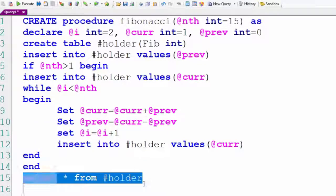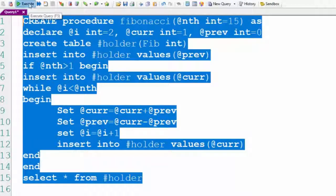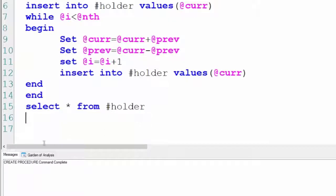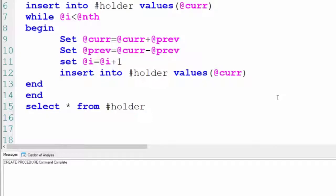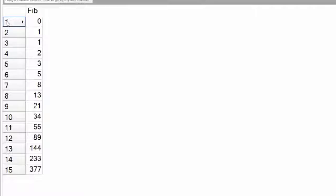When we're done, we'll select everything from the holder. Here we go. We've created the stored procedure. Now we're going to execute this. Execute Fibonacci, the parameter is going to be fifteen. Now it's going to build these: zero, one, one, two, three, five, eight, thirteen, twenty-one, thirty-four, fifty-five, eighty-nine, one forty-four, two thirty-three, and three seventy-seven. That is your Fibonacci numbers.